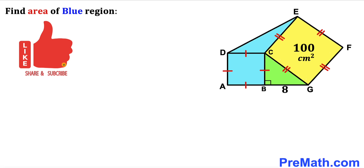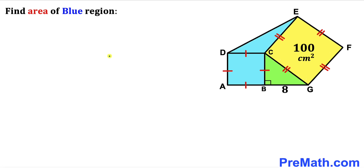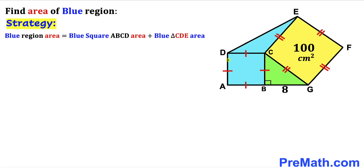Please don't forget to give a thumbs up and subscribe, and keep in mind that this figure may not be 100% true to scale. Let's get started. Since we are interested in calculating the area of this blue shaded region, we can observe that the blue shaded region area equals the blue square ABCD area plus the blue triangle CDE area.